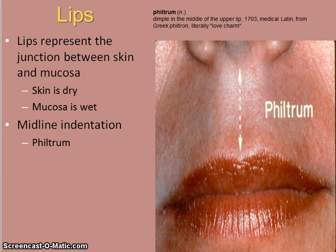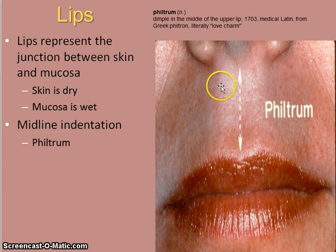The lips are the gateway to the oral cavity. They represent the junction between the skin and the mucosa. The skin is dry, the mucosa is wet. The structure in the center is an indentation called the philtrum.